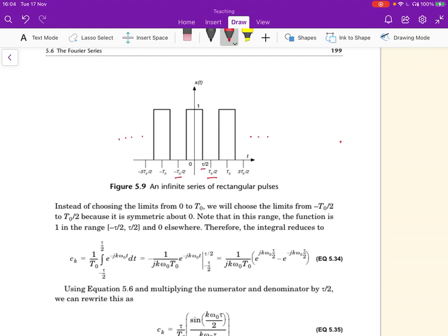Minus tau over 2 to tau over 2, and the period is T0, which goes from here to here is T0.